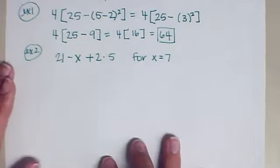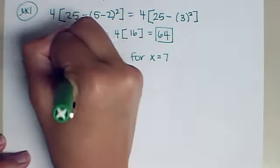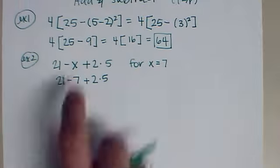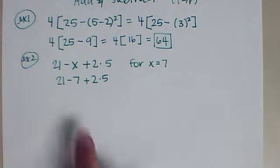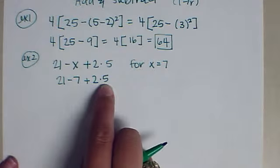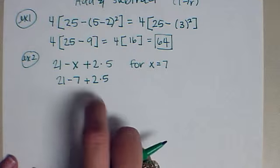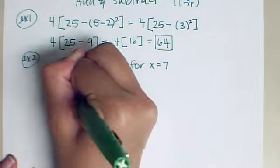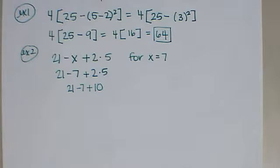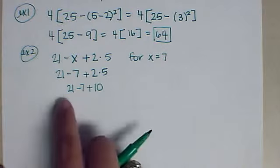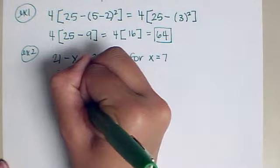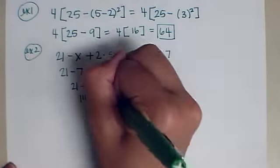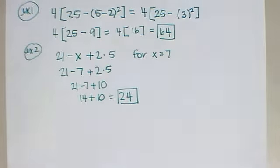On this problem, the first thing we want to do is plug in our x value. So we have 21 minus 7 plus 2 times 5. Again, notice the only thing that I changed was I put a 7 where the x is. Now I want to follow my PEMDAS. There are no parenthesis. There are no exponents. Next, I'm looking for multiply and divide. In this case, there's a multiply. So I'm going to do 2 times 5, which is 10. I'm going to copy down everything else around it. And finally, I'm going to do my add and subtract. I move from left to right here. So 21 minus 7 is 14 plus 10. And 14 plus 10 is 24. So 24 is our final answer.